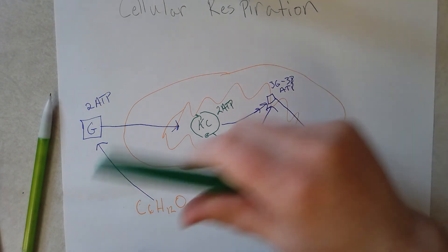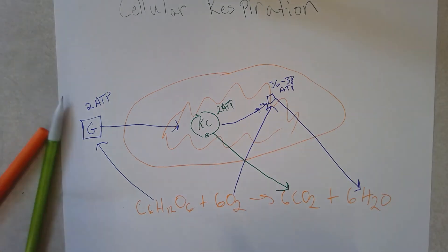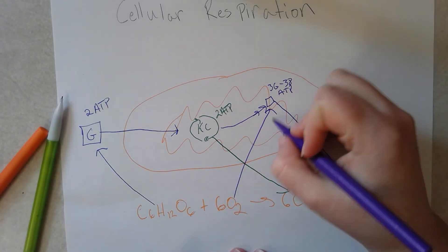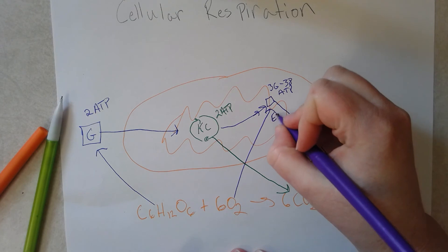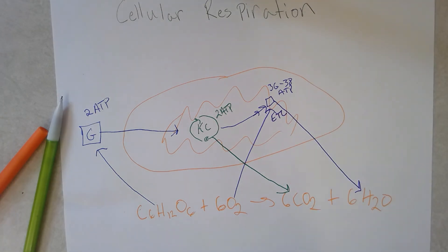And that you get the most ATP from the electron transport chain, which I didn't label - this is your ETC. We're going to be talking about the electron transport chain in a lot more detail in the coming advanced biology lessons, and you can see the chemical equation below.